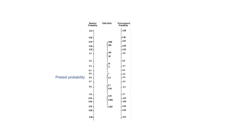Now let's compare our findings with the nomogram. We had a pre-test probability of 60% and a positive likelihood ratio of 8. With the help of the nomogram, we can see it leads to a post-test probability of around 92%, which matches our calculated result. Similarly, negative likelihood ratio of 0.2 leads to a post-test probability of around 24%, which is also the same as our calculated value.